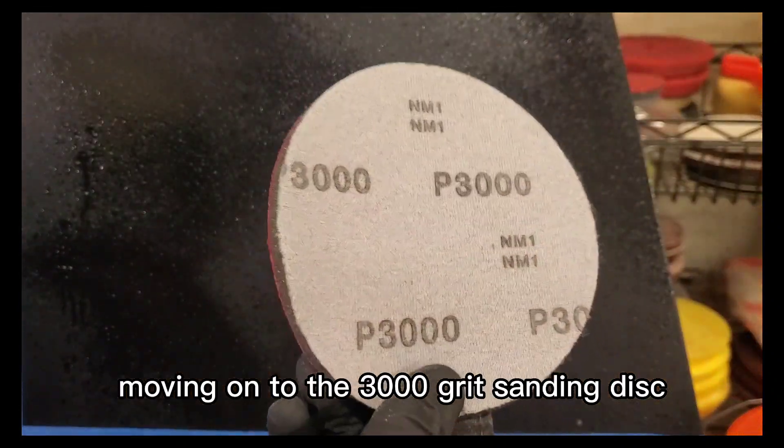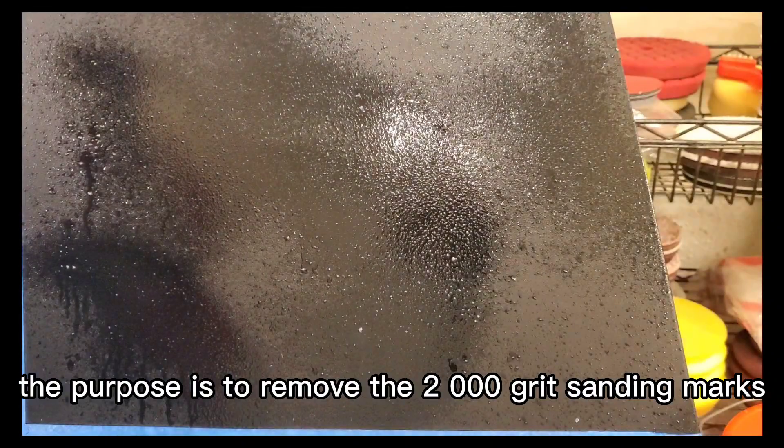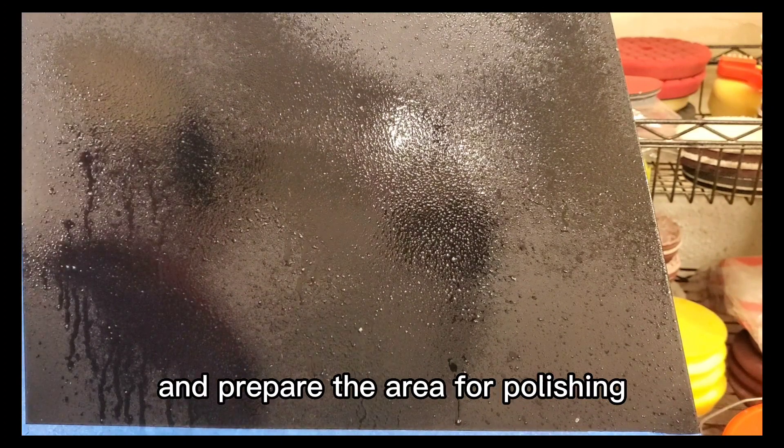Using the 3000 grit sanding disc, the purpose is to remove the 2000 grit sanding marks and prepare the area for polishing.